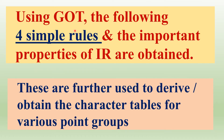Using the Great Orthogonality Theorem (GOT), the following four simple rules are obtained. These are also called the important properties of irreducible representations of a point group. These four simple rules are applied to derive the character tables for various point groups, and they are very important in group theory.